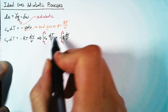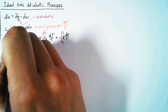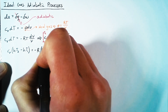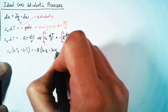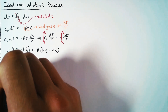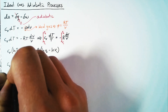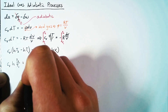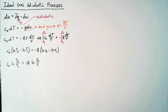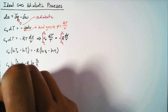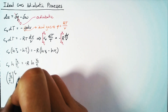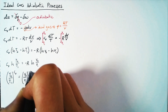Performing this integration, we end up with cv times the natural log of T2 minus the natural log of T1, which equals negative R times the natural log of v2 minus the natural log of v1. With logarithm rules, we can rewrite these as ratios: cv times the natural log of T2 over T1 equals negative R times the natural log of v2 over v1. This also means that T2 over T1 to the cv power equals v2 over v1 to the negative R power.